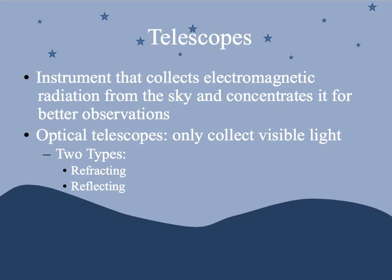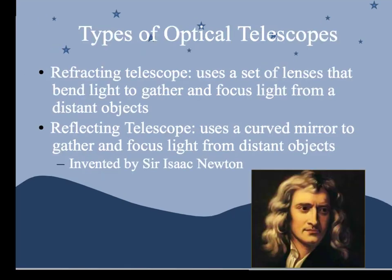Telescopes are instruments that collect electromagnetic radiation from the sky and concentrate it so we can make better observations. Optical telescopes are ones you can buy in a store — they only collect visible light. There are two types: refracting and reflecting. A refracting telescope uses a set of lenses that bend light to gather and focus it, whereas a reflecting telescope uses a mirror — and the reflecting telescope was invented by Sir Isaac Newton.